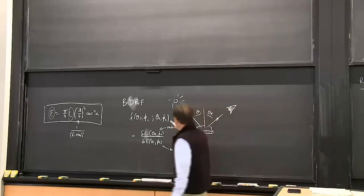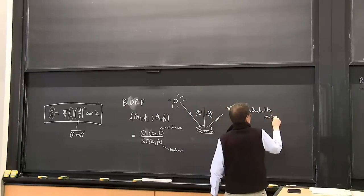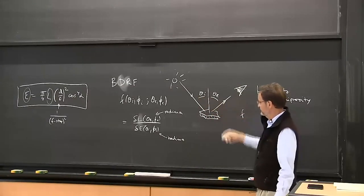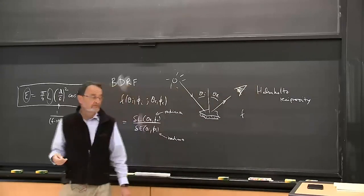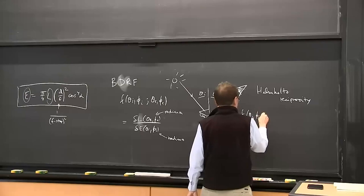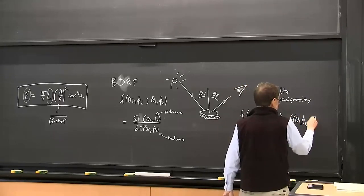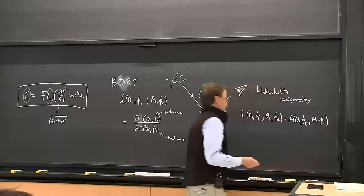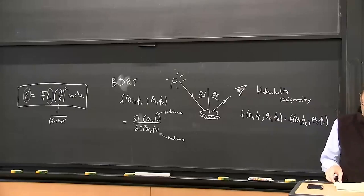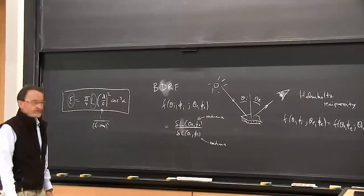This BRDF has to satisfy a constraint which basically says: if you interchange the direction to the source and the direction to the viewer, the BRDF should come out the same. That's because if it wasn't, we'd be violating the second law of thermodynamics. In computer graphics, they use models of surface reflectance, and quite a number of those models violate this constraint.